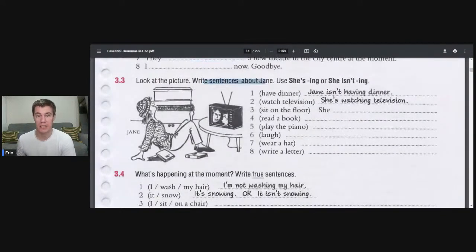Look at the picture. Write sentences about Jane. You can use she is plus ing or she isn't plus ing. Jane isn't having dinner. She's watching TV. She is sitting on the floor. She isn't reading a book. She isn't playing the piano. She is laughing. She is wearing a hat. She isn't writing a letter.